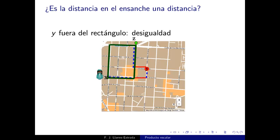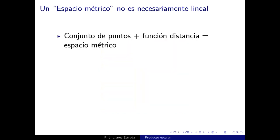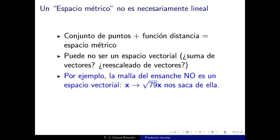Un conjunto de puntos equipado con una función distancia es un espacio métrico, también llamado espacio geométrico, pero no es necesariamente un espacio vectorial. Por ejemplo, el espacio del ensanche no es vectorial sobre ℝ: si multiplicamos un punto de la malla por √79, que no es entero, salimos de la malla y caemos en mitad de un edificio, fuera del alcance del paseante o del taxista.